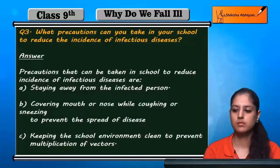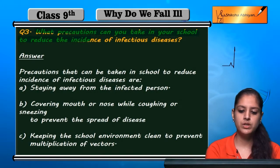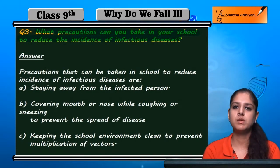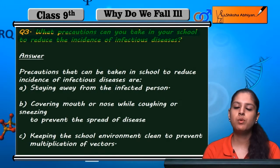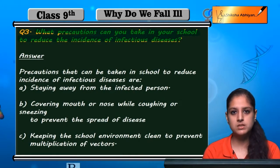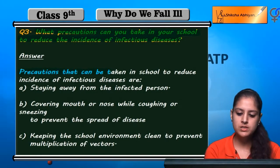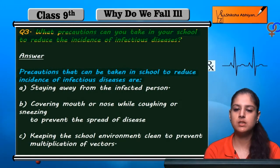Question 3: What precautions can you take in your school to reduce the incidence of infectious disease? Infectious diseases are communicable, meaning infections can spread. There are some precautions that can be taken in school to reduce the incidence of infectious diseases.